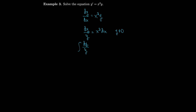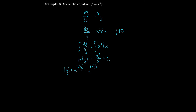We have the integral of dy over y equal to the integral of x squared dx. The integral of 1 over y is the natural log of the absolute value of y, and on the other side we get x cubed over 3 plus c. Taking e to both sides, the absolute value of y equals e to the (x cubed over 3 plus c), which by laws of exponents is e to the c times e to the x cubed over 3.